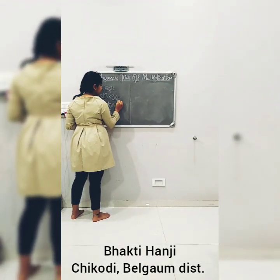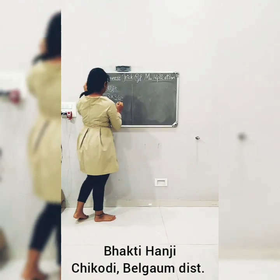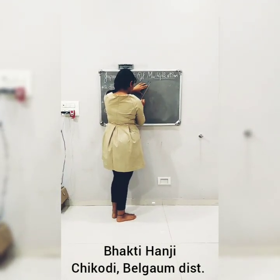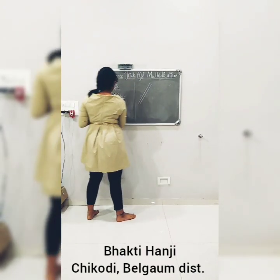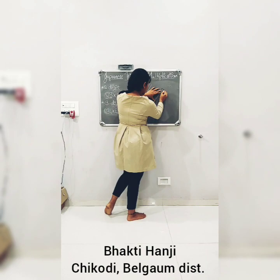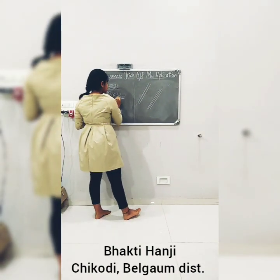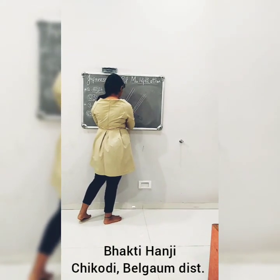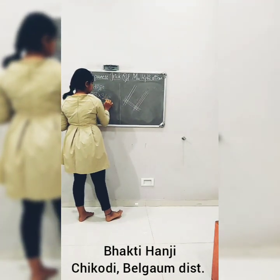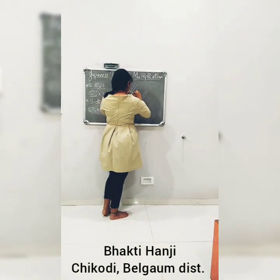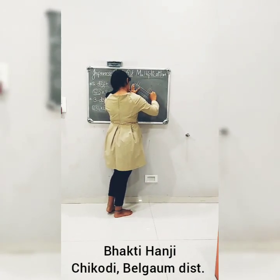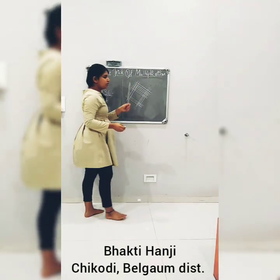Here I have taken 23 and 36 as 2-digit numbers. Let us solve this. So the first number is 23 — let us draw 2 lines, 1 and 2. And the next digit is 3, so let us drop 3 lines here. Please remember that they should be between these 2. And the next number is 36 — let us drop 3 lines, then 1, 2, 3, 4, 5, and 6. So now the lines are completed.